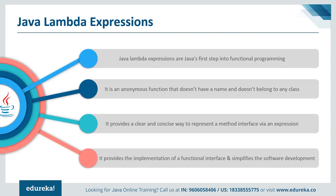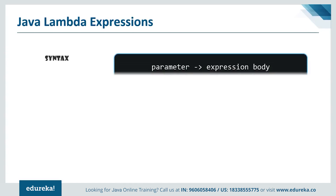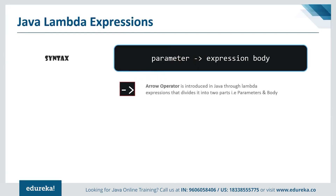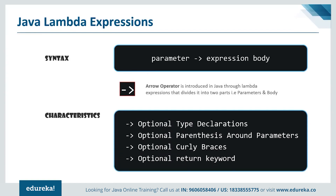Lambda expressions provide a clear and concise way to represent a method interface via an expression — one single expression, that would be all. It provides the implementation of a functional interface and simplifies software development. Syntactically, we have the arrow operator: we pass parameters, write the arrow operator, then write the body. Declarations, parentheses around parameters, curly braces, and the return keyword are all optional.